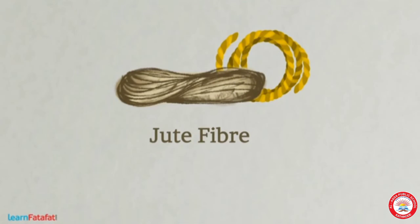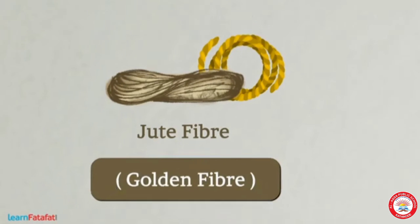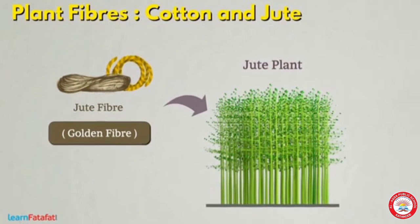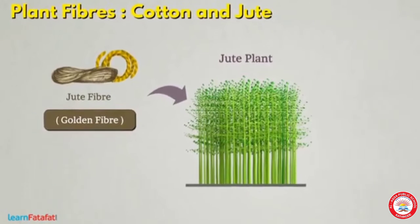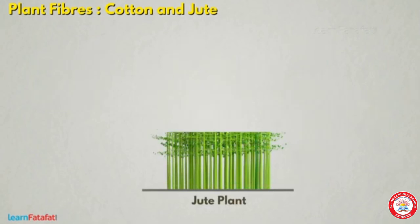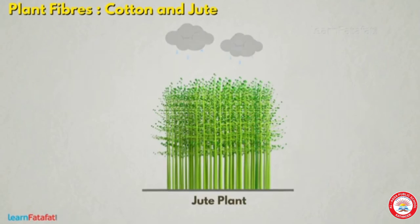Next is jute fiber. It is also known as the golden fiber. Jute we are getting from jute plants. In India, jute is mainly grown in West Bengal, Bihar and Assam.